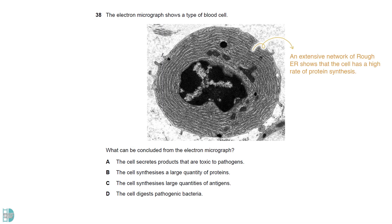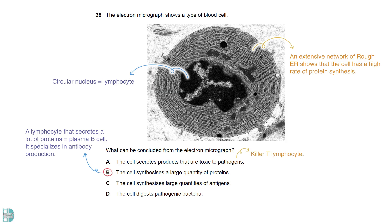The extensive network of rough ER shows that the cell has a high rate of protein synthesis. Judging from the circular and large nucleus, it is a lymphocyte. A lymphocyte that secretes a lot of proteins is a plasma B cell, as it is specialized in antibody production. A describes a killer T lymphocyte. C is wrong because white blood cells do not need to secrete antigens. D is a phagocyte. Neutrophil has a multi-lobed nucleus, and monocyte has a horseshoe-shaped nucleus.